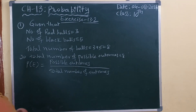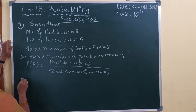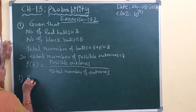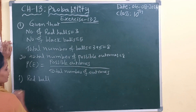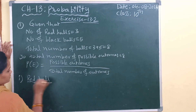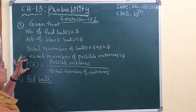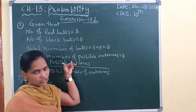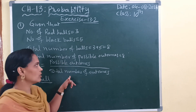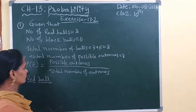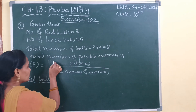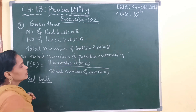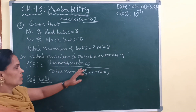Total possible outcome is 8. Now, first bit — what we need to find out is the probability of getting a red ball. For that, we know the formula: probability of an event is equal to number of favorable outcomes divided by total number of outcomes.